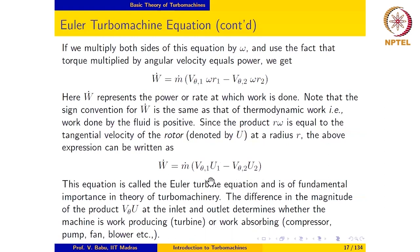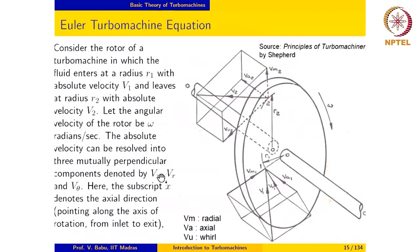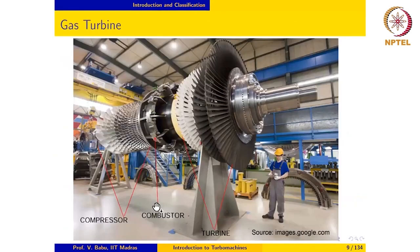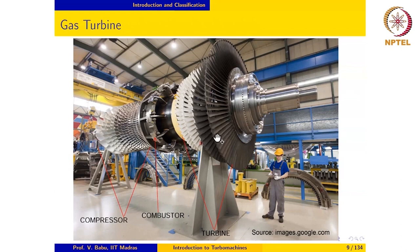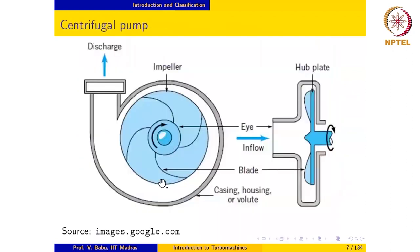A natural question arises: in an actual device, the fluid enters and exits along the entire height of the blade, so how do we evaluate Vθ1, Vθ2, U1, and U2? U1 will vary along the height of the blade, and Vθ1, Vx1, and Vr1 all vary as well. Similarly, in a centrifugal machine, Vθ1, U1, and other components vary along the length of the impeller as the fluid flows through. So how do we evaluate Vθ1, U1, Vθ2, and U2 in these cases?